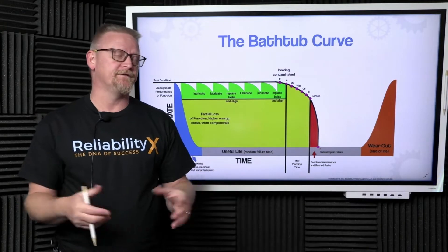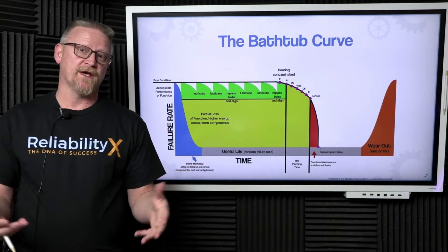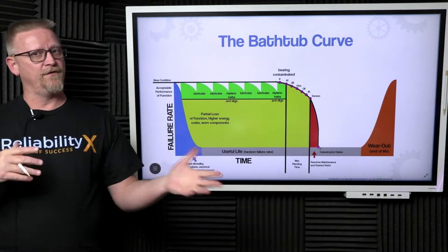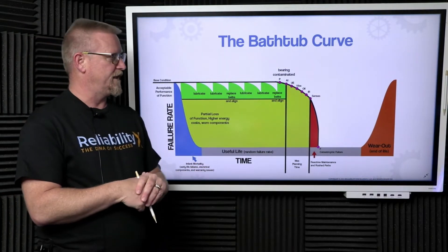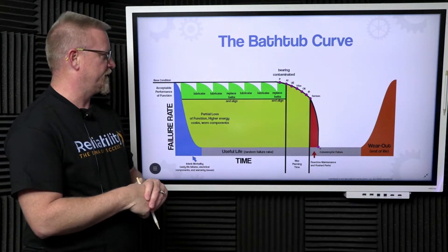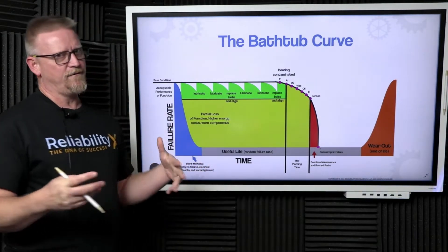Based on Nolan and Heap's study and all the variety of failure mechanisms and failure curves associated with components, we end up with what's called the bathtub curve.